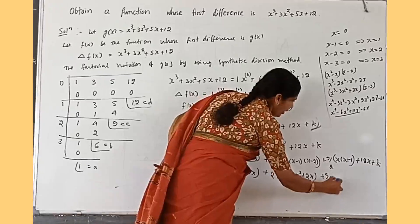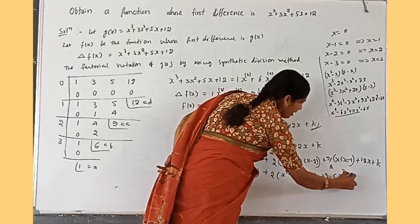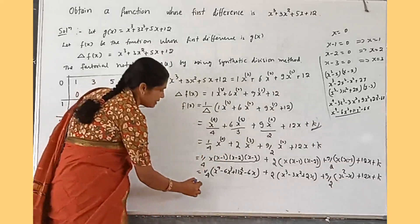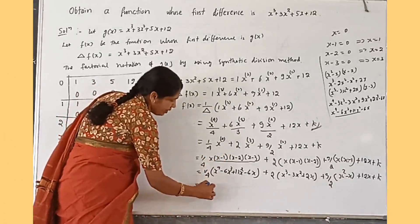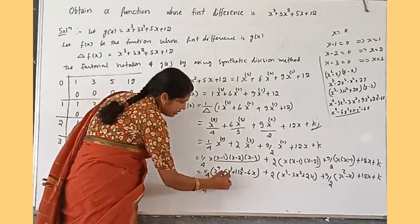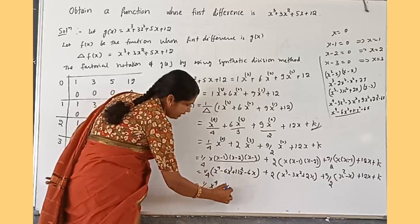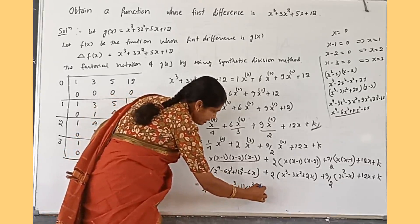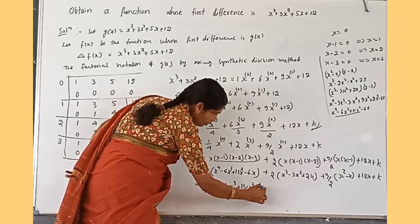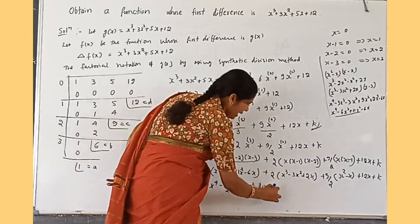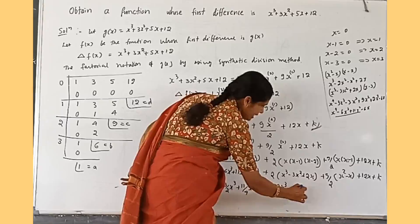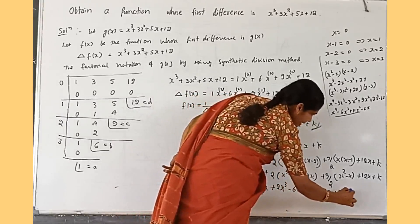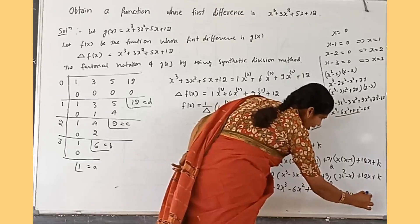Then (9/2)·x(x−1) = (9/2)(x² − x). Now combining all terms row by row: (1/4)(x⁴ − 6x³ + 11x² − 6x) + 2(x³ − 3x² + 2x) + (9/2)(x² − x) + 12x + k. This gives (1/4)x⁴ − (3/2)x³ + (11/4)x² − (3/2)x + 2x³ − 6x² + 4x + (9/2)x² − (9/2)x + 12x + k.